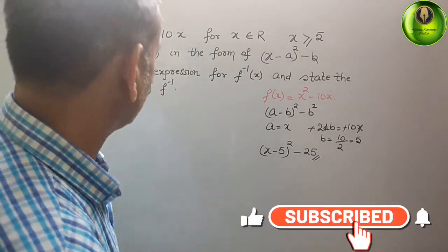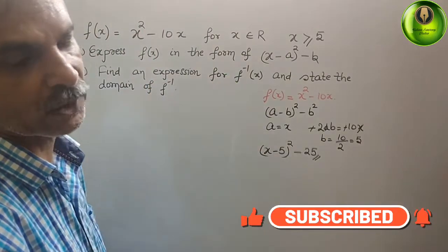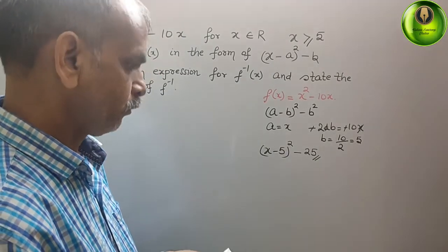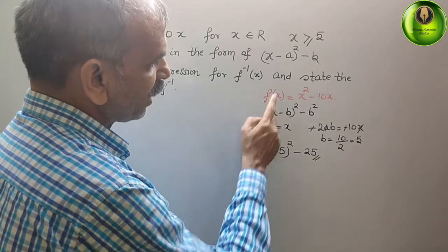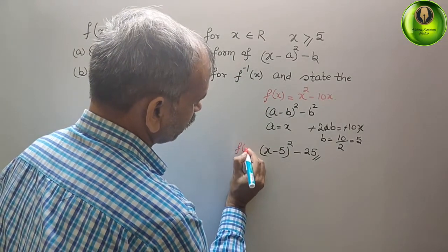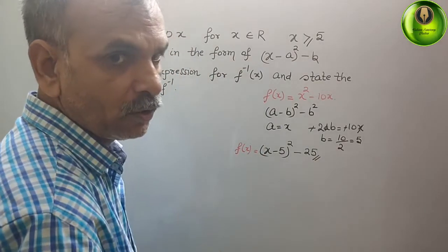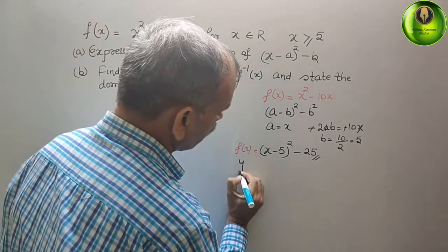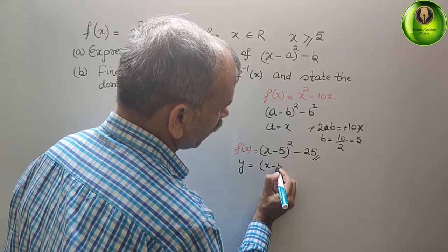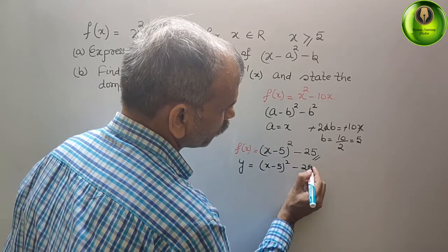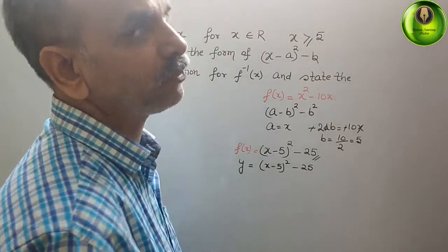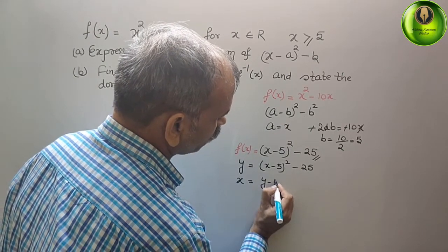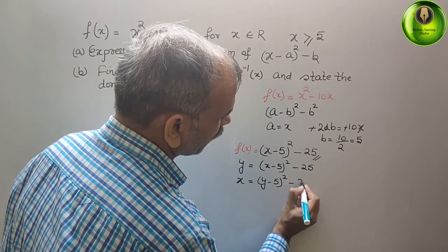Now, they have told us to find an expression for f inverse of x. We know that f(x) = (x minus 5)² minus 25. In place of f(x), we write y. So we get y = (x minus 5)² minus 25. Now replace x with y and y with x. So we get x = (y minus 5)² minus 25.